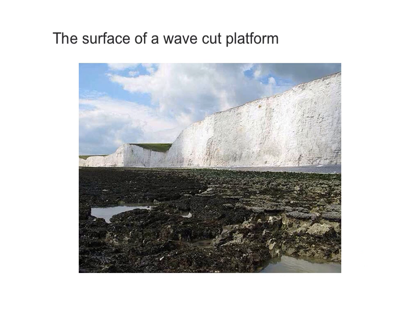It's important to note that the wave-cut platform, although we understand the word 'platform' as being some kind of flat area, a platform cut by the waves is certainly not flat. You can see from this photograph the jagged nature of the wave-cut platform. It leaves areas of dips in the platform which can be filled by water at high tide, and when the tide goes out, it leaves water behind in these — which is why you may have been rock pooling, looking for crabs and so on.